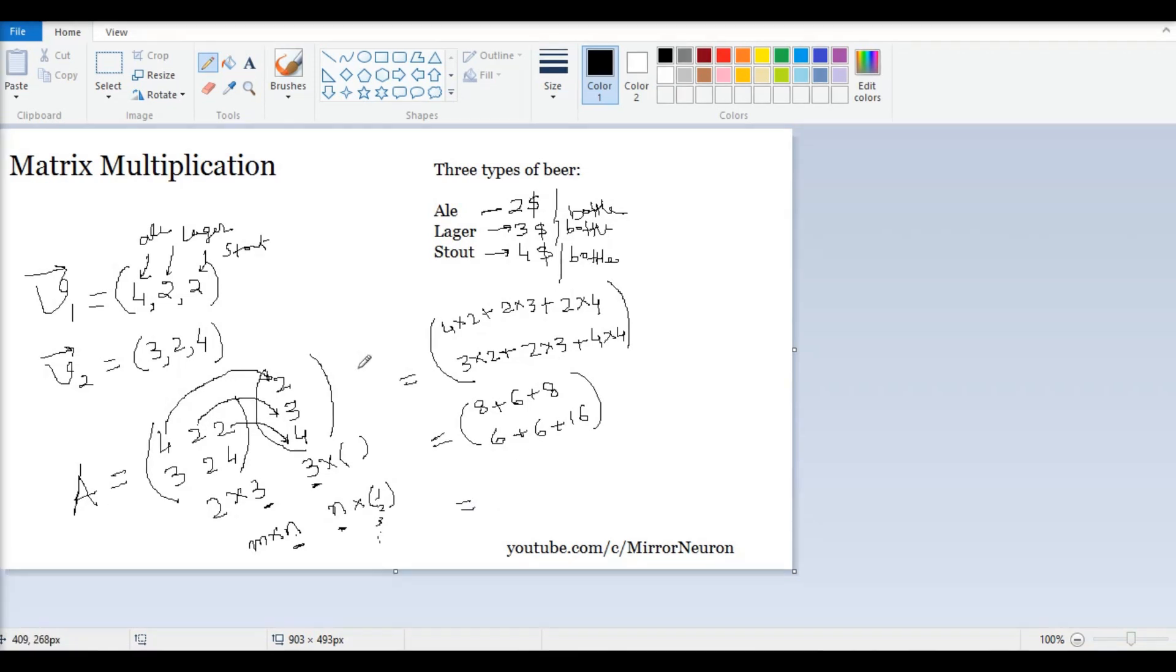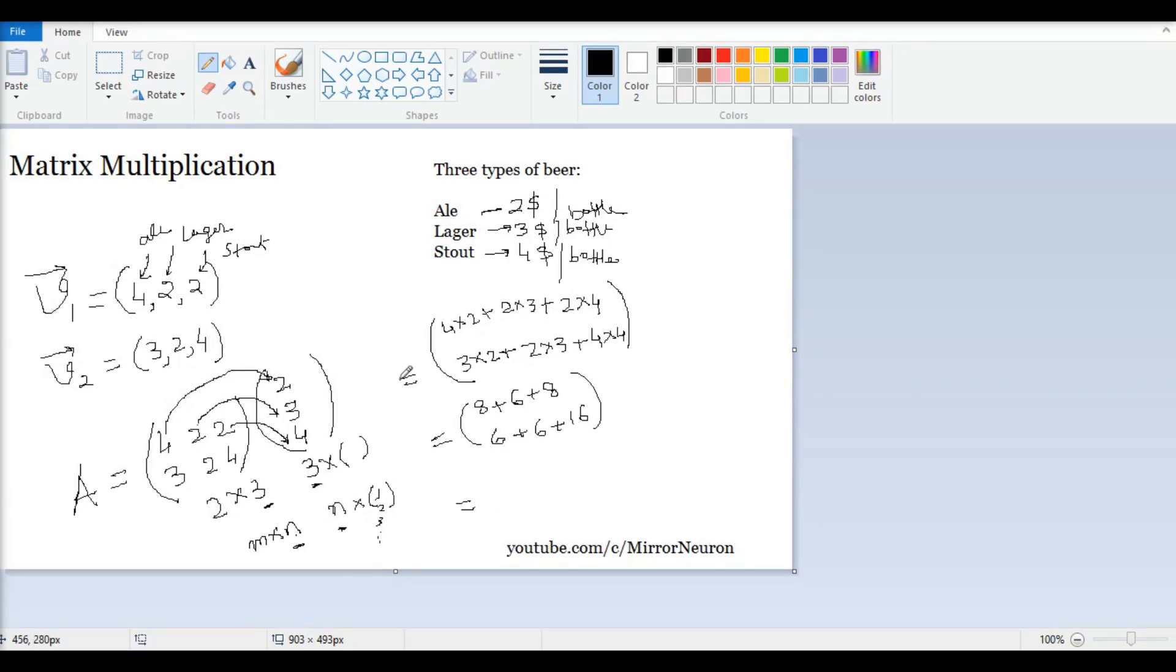And the final total is 14 plus 8, which is 22, and 12 plus 16 is 28. So that means I made around 22 dollars and my friend made around 28 dollars.